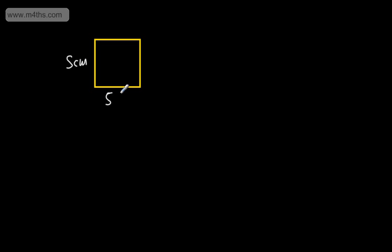Let's take a square and put on some dimensions. If we have a square that is 5 centimetres by 5 centimetres, we know that the area is going to be 5 times 5, which gives us 25 centimetres squared.